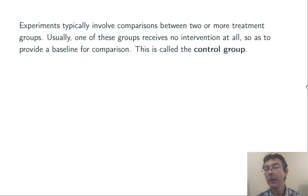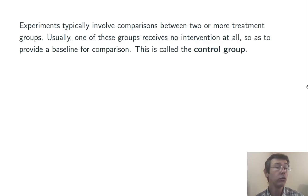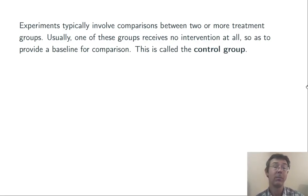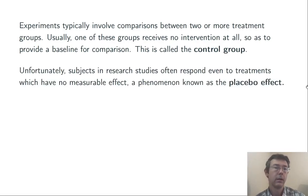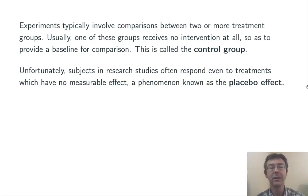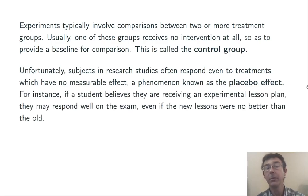Experiments typically involve comparisons between two or more treatment groups. Usually, one of those groups receives no intervention at all, just to give you a baseline for comparison — this is called the control group. Unfortunately, subjects in research studies often respond even to treatments that have no measurable effect. This is known as the placebo effect.